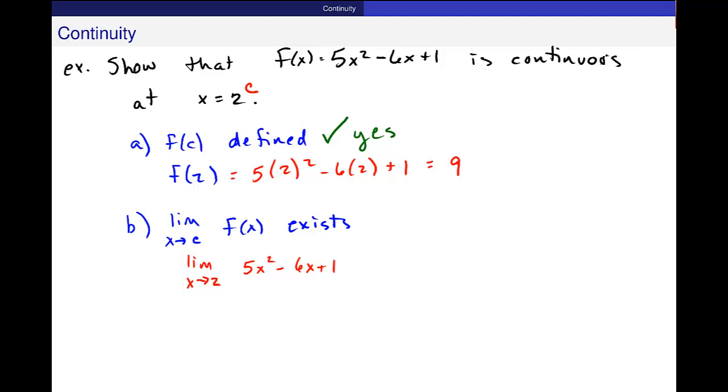It says if I want to take the two-sided limit, that's fine, just plug in. That's one of our rules. And when I plug in, this limit is equal to 9. Fantastic. So yes, check. It meets this second criteria.